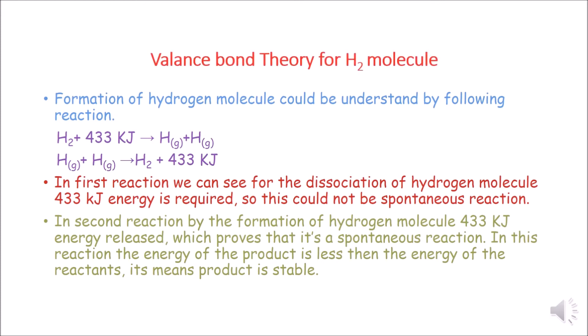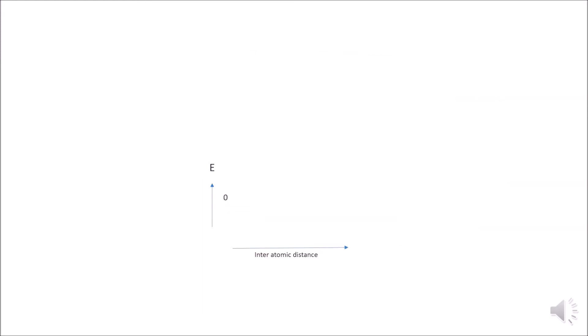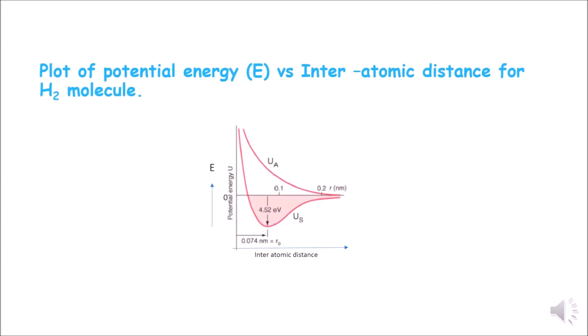Now I will show you a graph of how the hydrogen molecule is formed and what is the relation between its potential energy and interatomic distance for the H2 Molecule. On the x-axis I have taken interatomic distance, and on the y-axis I have taken potential energy.